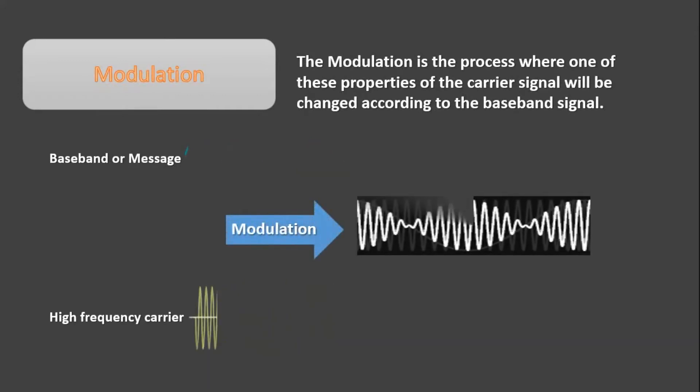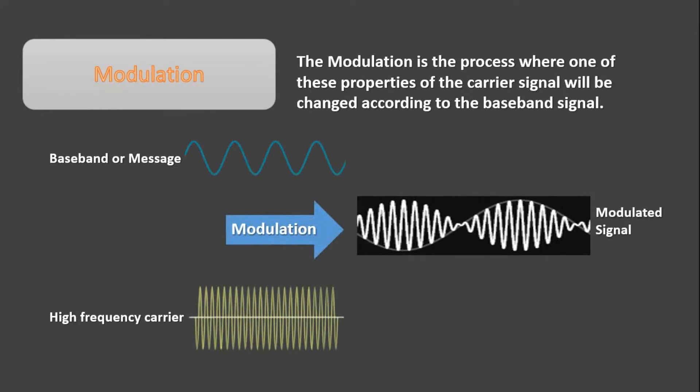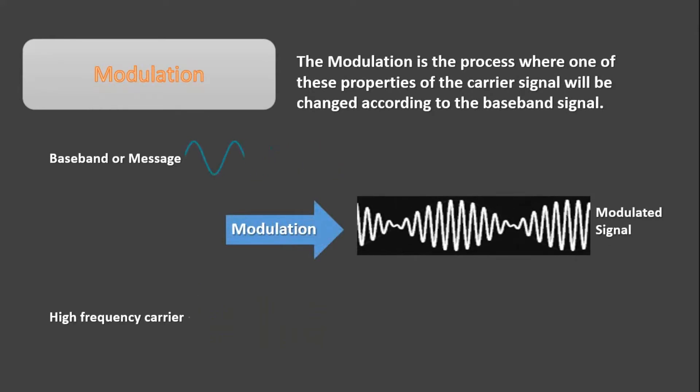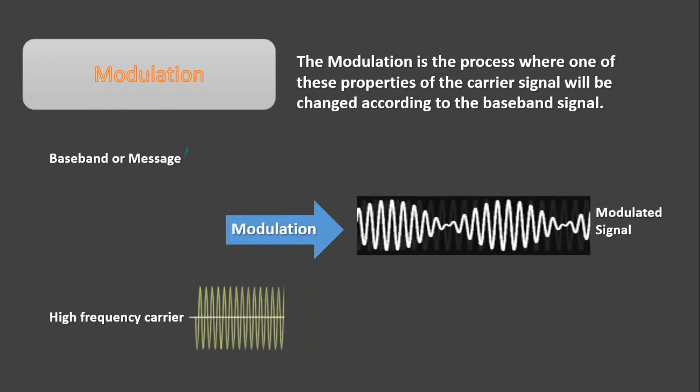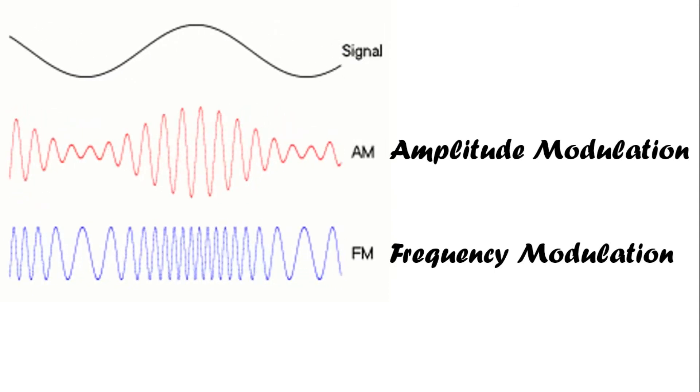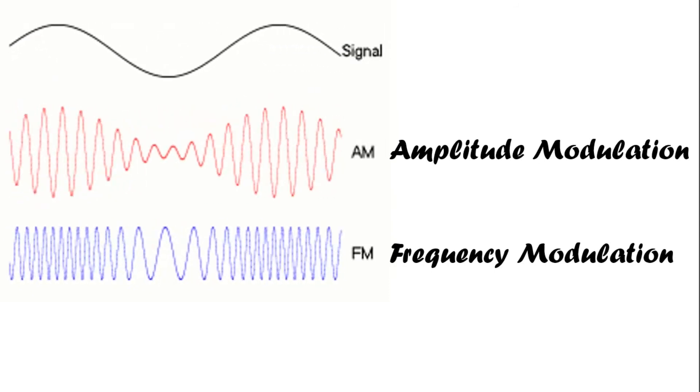And based on which property is changing, there are different types of modulation techniques present in communication systems like amplitude modulation, frequency modulation, and so on.